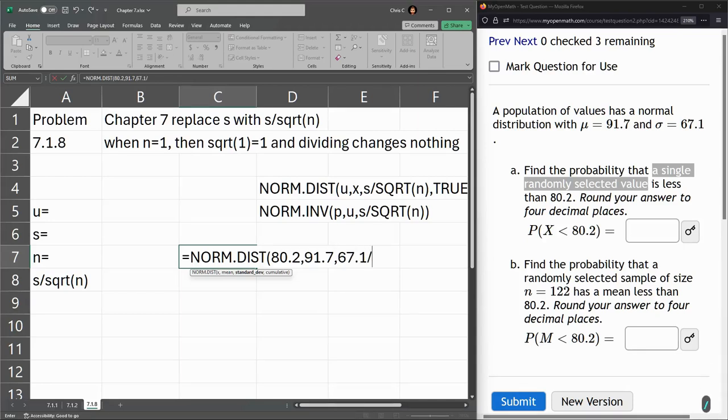Now, I'm still going to divide by the square root of 1, which is the same as dividing by 1. That doesn't change anything. But it'll let me copy and paste in a minute. And we're going true because it's a less than cumulative. And hit enter.